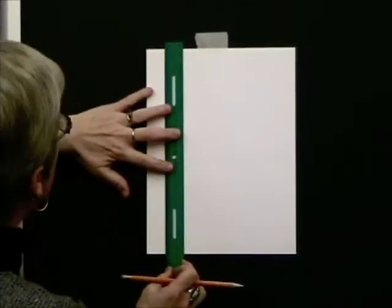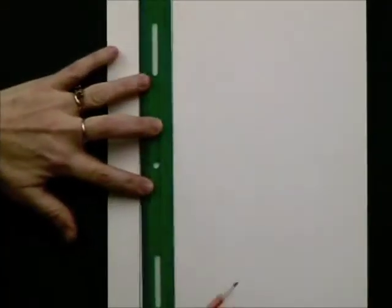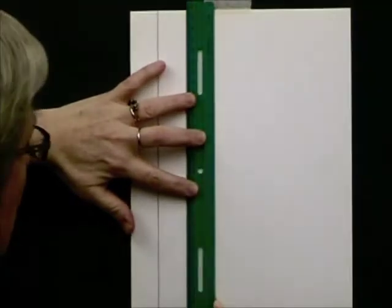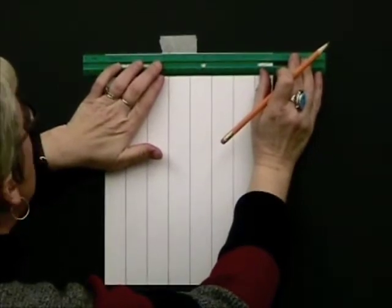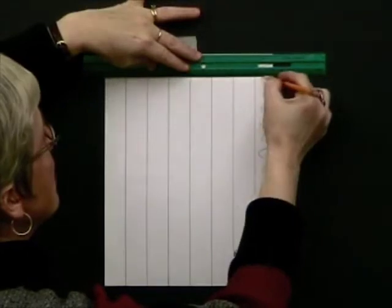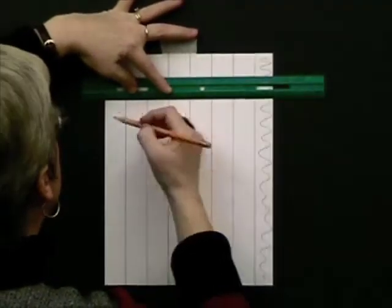Then you slide it over and draw another line and so on and so on the whole way across the sheet. Now we're going to take our ruler and put it at the very top edge and we'll do the horizontal lines on the grid the whole way down to the bottom.